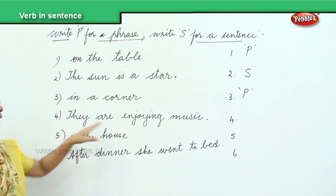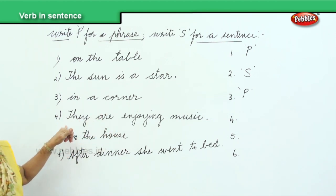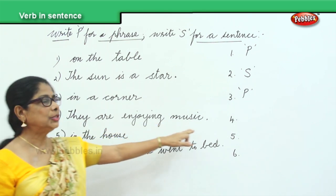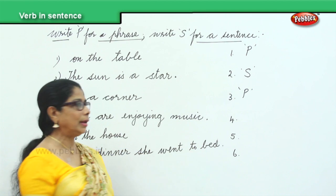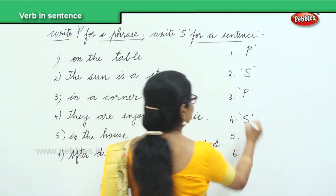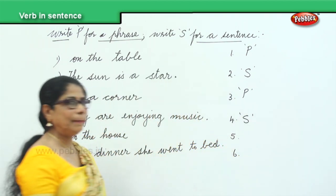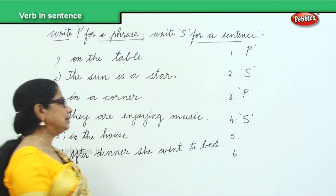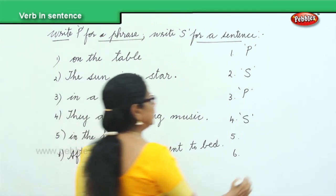They are enjoying music — it begins with a capital letter, it has a verb, it ends with a full stop, it makes complete sense — it is a sentence, S. In the house — it is a group of words, it does not make complete sense, so that is a phrase, P.